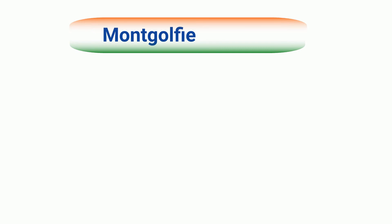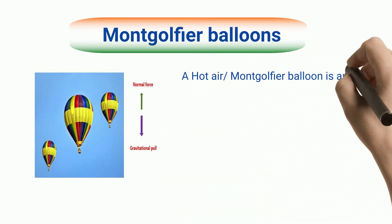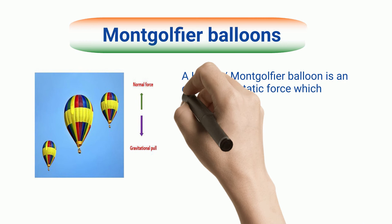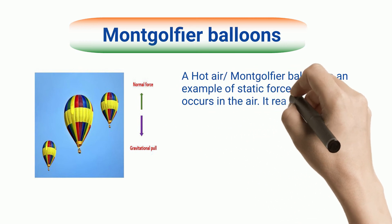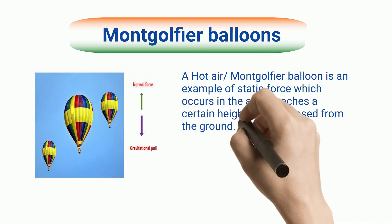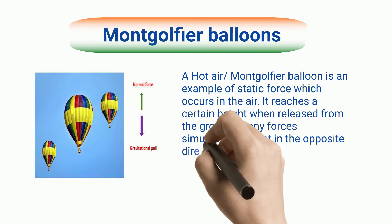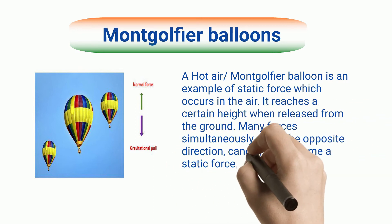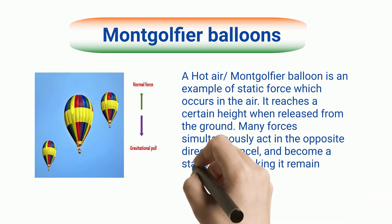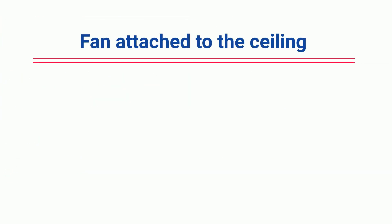A hot air or montgolfier balloon is an example of static force which occurs in the air. It reaches a certain height when released from the ground. Many forces simultaneously act in opposite directions, cancel each other, and become a static force, making the balloon remain stationary in the air.